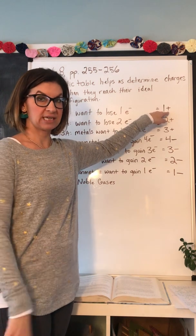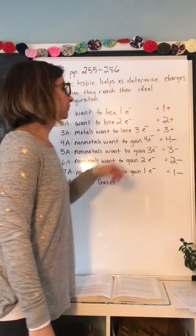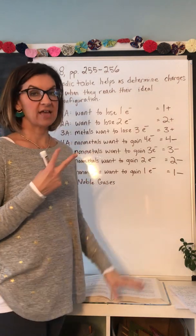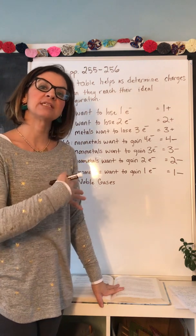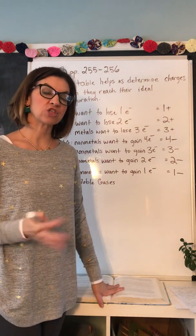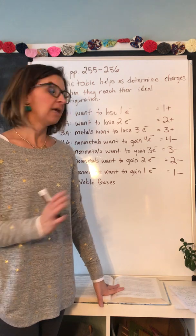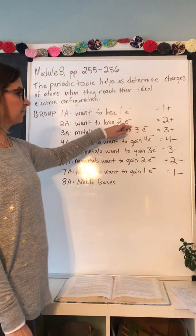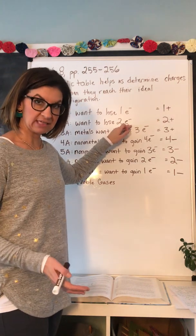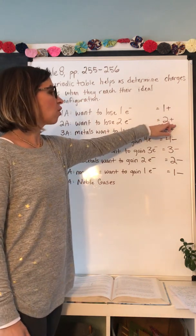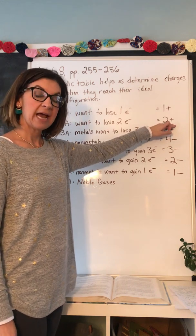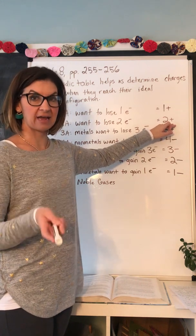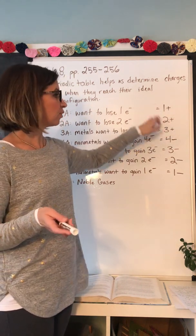Group 2A has two valence electrons, so again it's easiest for it to just lose those two electrons — give them up to another atom. So group 2A wants to lose two electrons. Once it loses those two valence electrons, it ends up with an overall charge of 2+. Remember, an atom that has a positive or negative charge is called an ion, so at this point it has become an ion.